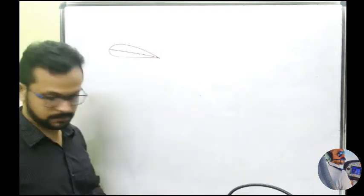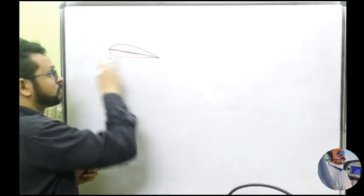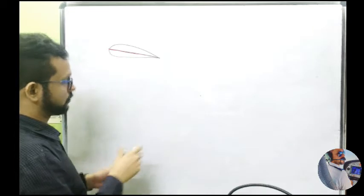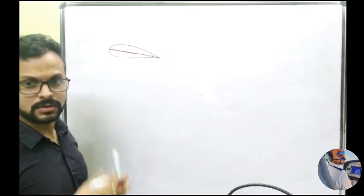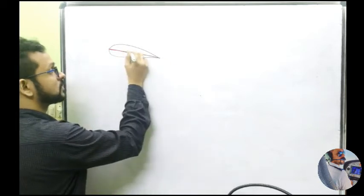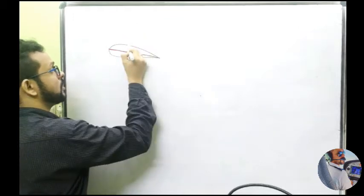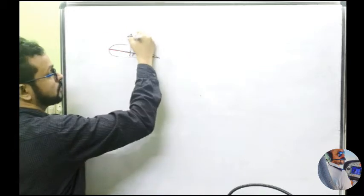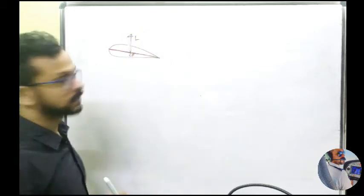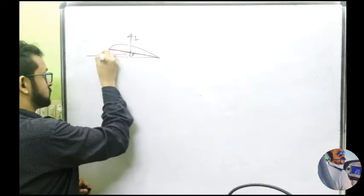The chord line joins the centers of curvature of the leading edge and the trailing edge. I'm saying this definition multiple times for you to actually register it. The center of pressure CP is somewhere on the chord line, and we assume the entire lift to act from this point — the CP.